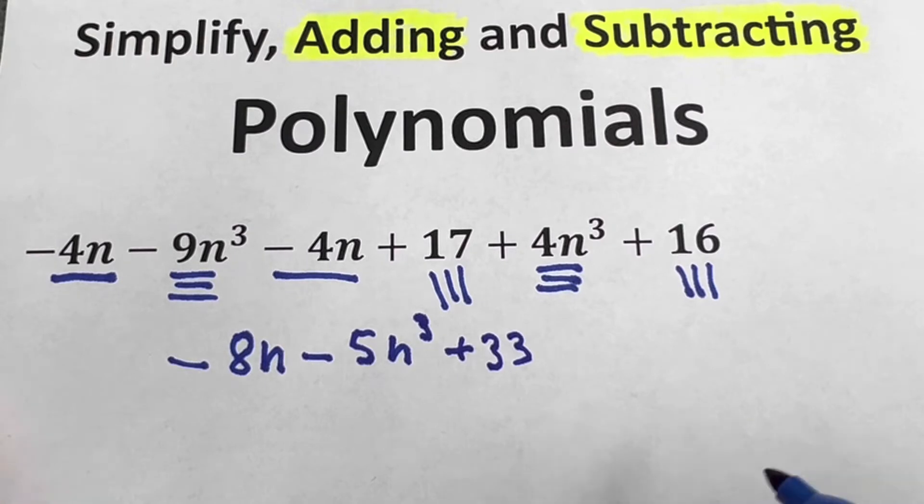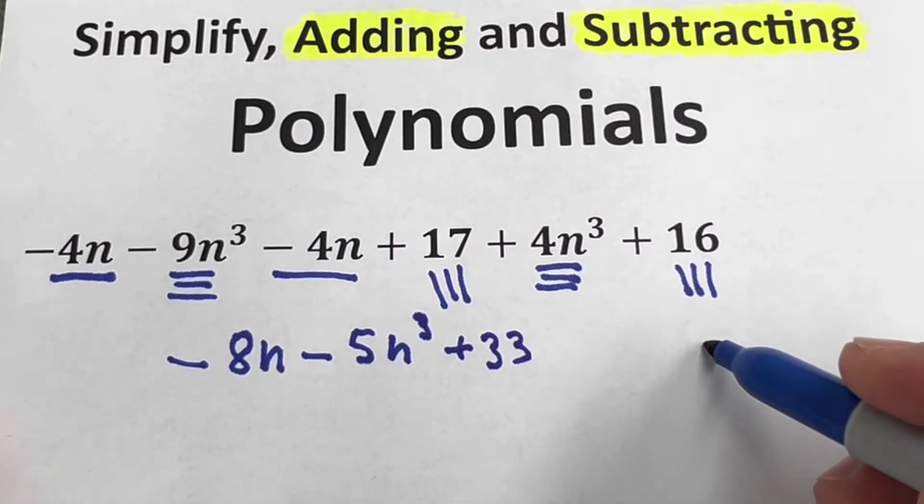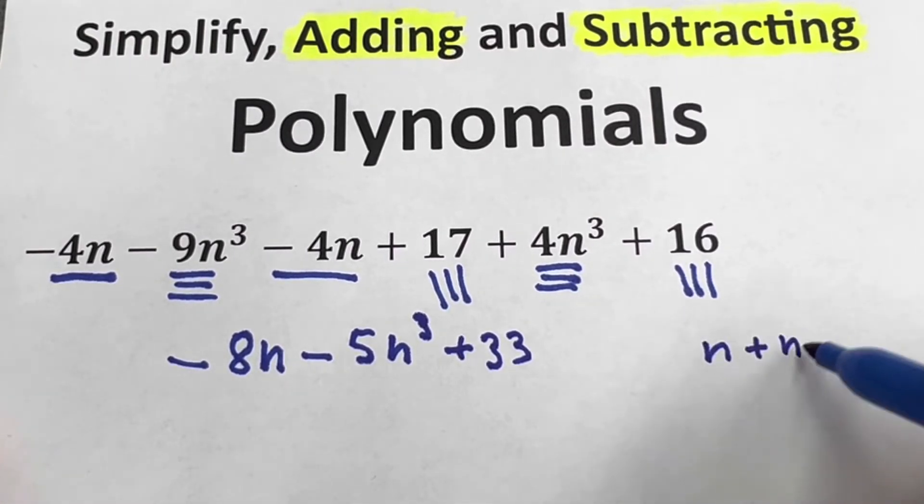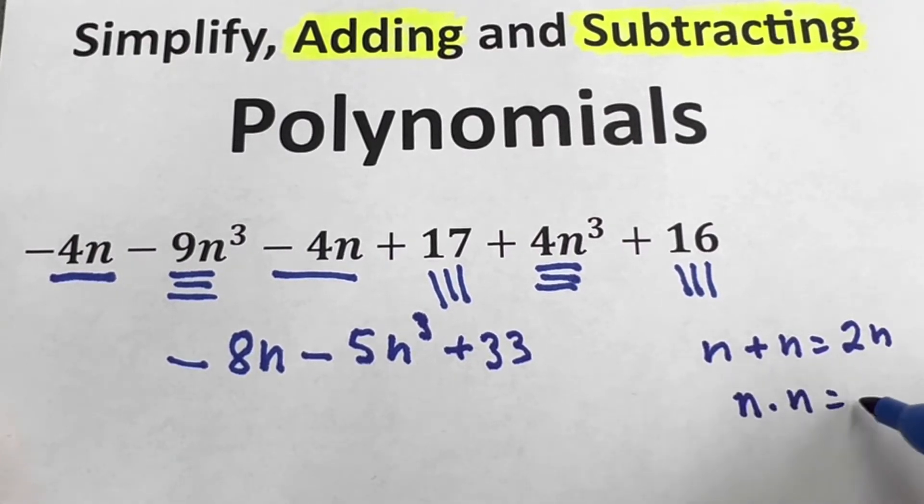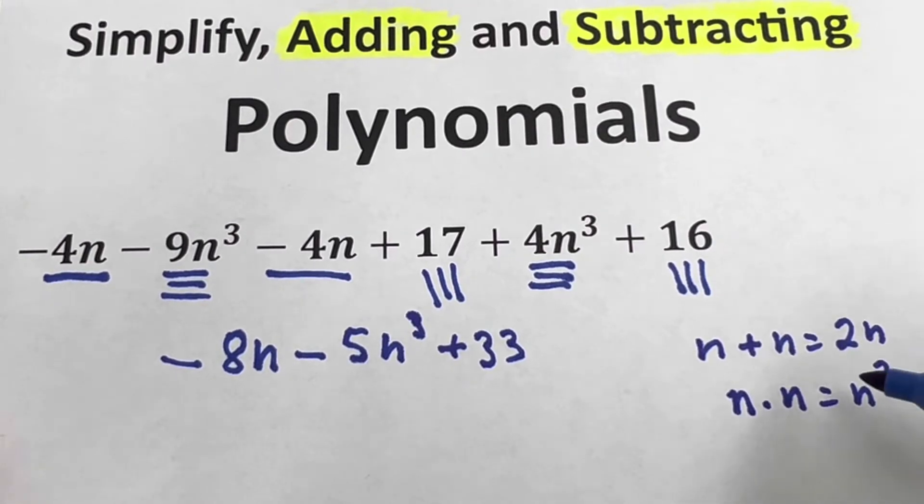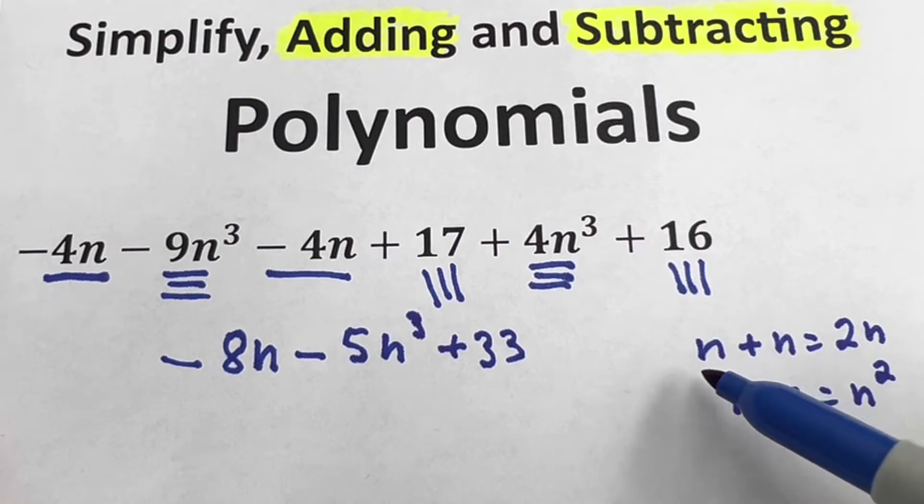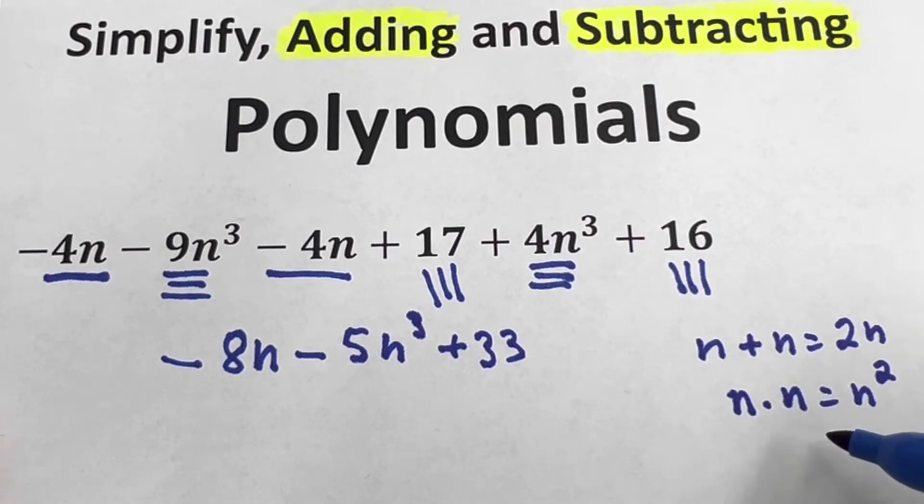Before I continue, let me tell you that it's not the same: n + n equals 2n, but when we do n × n, that's equal to n². Those two things are different. We're talking today about adding and subtracting. We're going to do multiplying and dividing in the future.